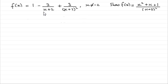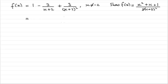Now, how do we turn f of x, this part here, into this part over here? Well, we're going to need to simplify it — put it all over a common denominator. And we've got a clue that it's going to be x plus 2 all squared.